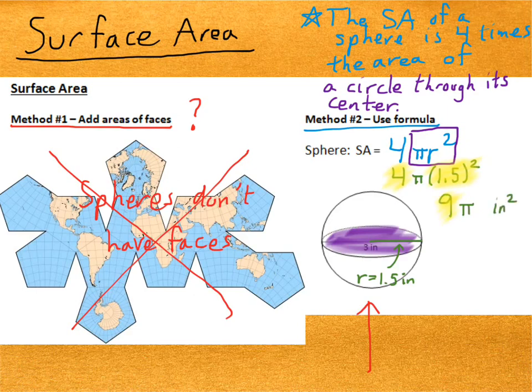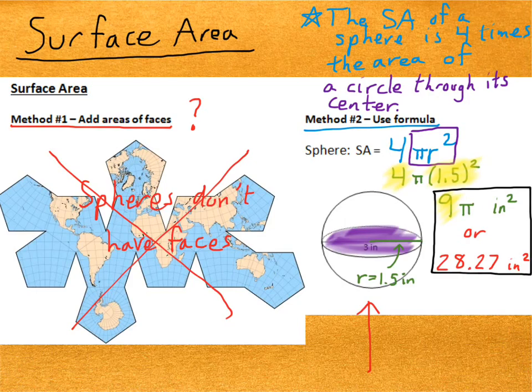Because 4 times 1.5 squared, if I type it in the calculator, gives me 9. I could also come up with a decimal approximation. So, typing 9 times pi in the calculator would give me 28.27 inches squared. Either one is an acceptable answer.